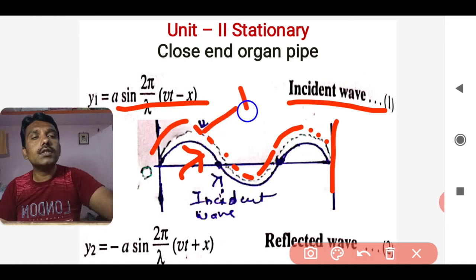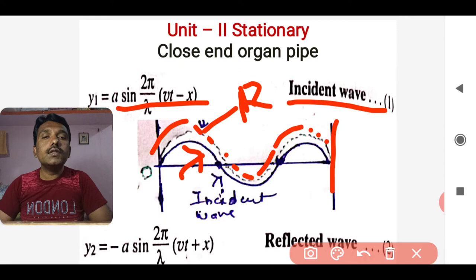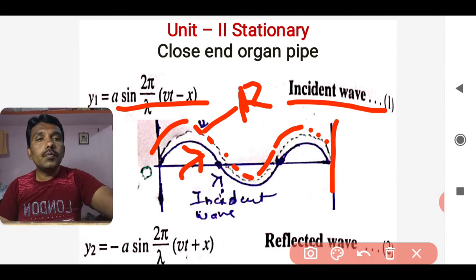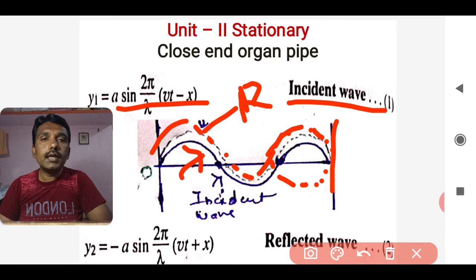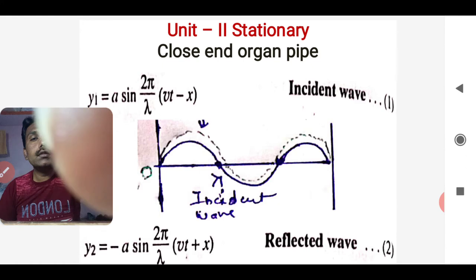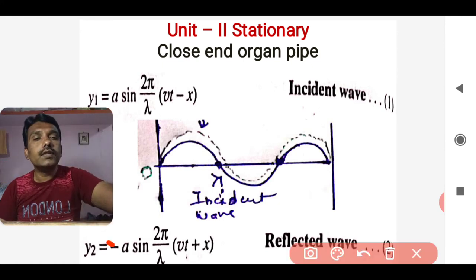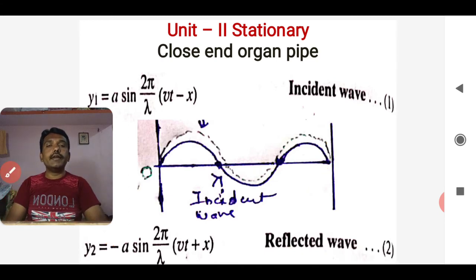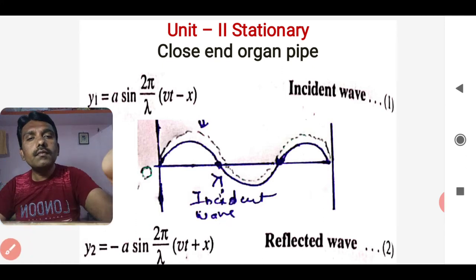Due to the closed end, whatever the incident wave is, it is going to be reflected. Now if you look at this reflected wave, it is reflected in a different fashion. When it comes to the closed end, the crest is not going to remain a crest — it is becoming a crest-to-crest reflection. The factor is that the reflected wave is changing its phase by π, that is 180°.